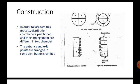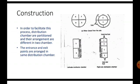Fifth point under the construction is: in order to facilitate this process, distribution chambers are partitioned and their arrangements are different in two chambers, and the entrance and exit points are arranged in same distribution chamber. This is the main difference between tubular and multipass heater. Here we see in the figure there are two chambers, right side distribution chamber and left side distribution chamber, and there are compartments A, B, C, D. Here the inlet and outlet points are arranged in same distribution chamber.